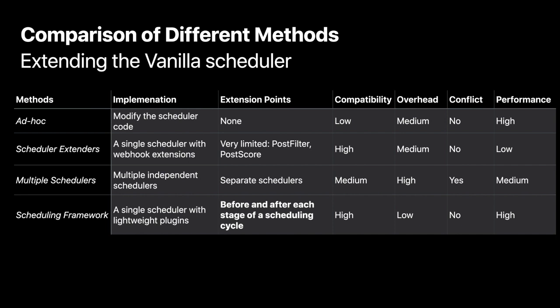The third approach is to run a separate custom scheduler alongside the native scheduler. The problem with this approach is it's very hard to coordinate scheduling conflicts, so it introduces race conditions, and it's still an open question how to solve this at larger scale in production systems. By contrast, the scheduling framework provides a uniform, very lightweight, and fine-grained extension mechanism. You can customize and extend the scheduling flow logic and algorithm before and after each stage. Because it's built into the scheduler binary and runs as a single scheduler, it eliminates serialization overhead and can offer much better performance.